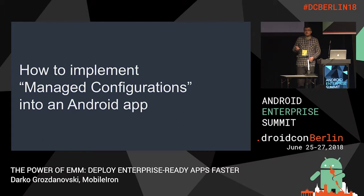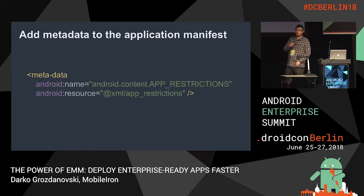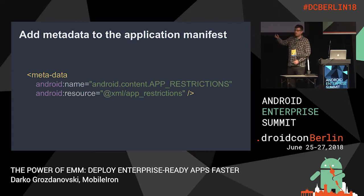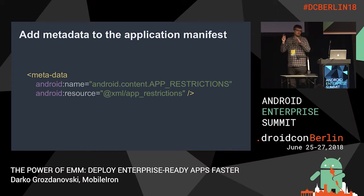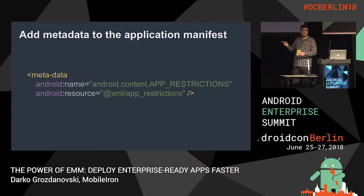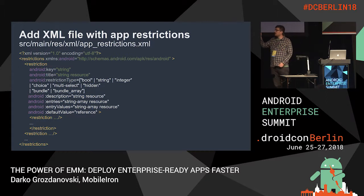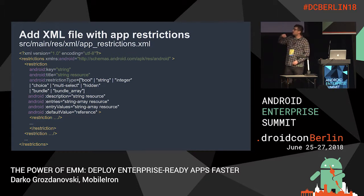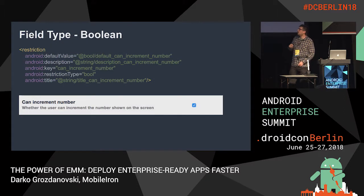Let's talk about the actual implementation of Android managed configurations. What you start with is adding this to your Android manifest - basically define that you're going to request a managed configuration. This is part of an API called app restrictions, which has been renamed to managed configurations quite recently, so you'll find more references to app restrictions in the documentation. The next step is to define an XML resource - this is the template of how you build this up, a list of restrictions. Each restriction typically has a couple of required parameters and optional ones that change based on the type of restriction.